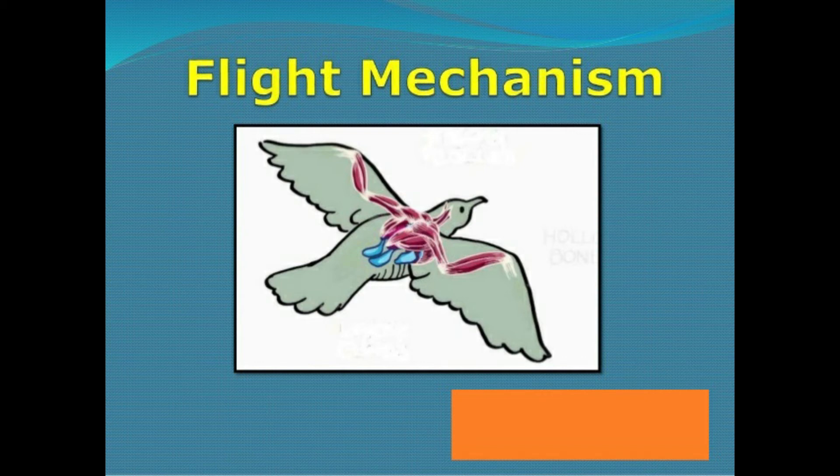The skeleton of the bird is modified for flight. The most obvious adaptations are the bones with large air spaces which make them lighter. The forelimbs evolved into wings with very strong pectoral muscles which pull the wings up and down.